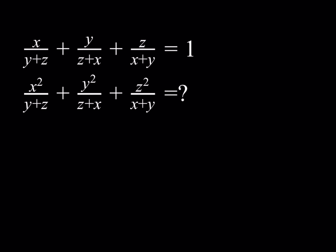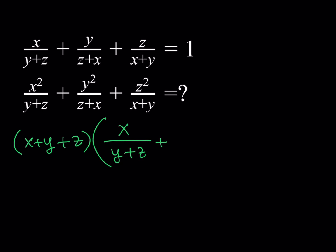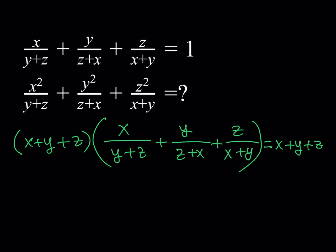So here's the plan: we're going to multiply the original expression by x, then by y, then by z — which means multiplying the whole expression by (x+y+z). When you distribute, multiplying by x gives the first target term, multiplying by y gives the second, and multiplying by z gives the third. Since we multiply both sides by (x+y+z), the right side becomes 1·(x+y+z) = x+y+z. Note that y+z, z+x, and x+y must all be nonzero.